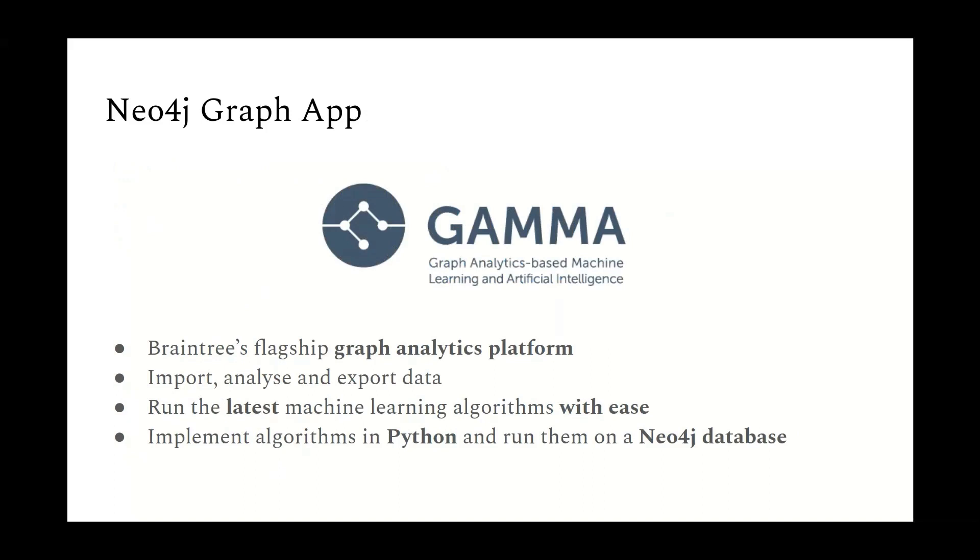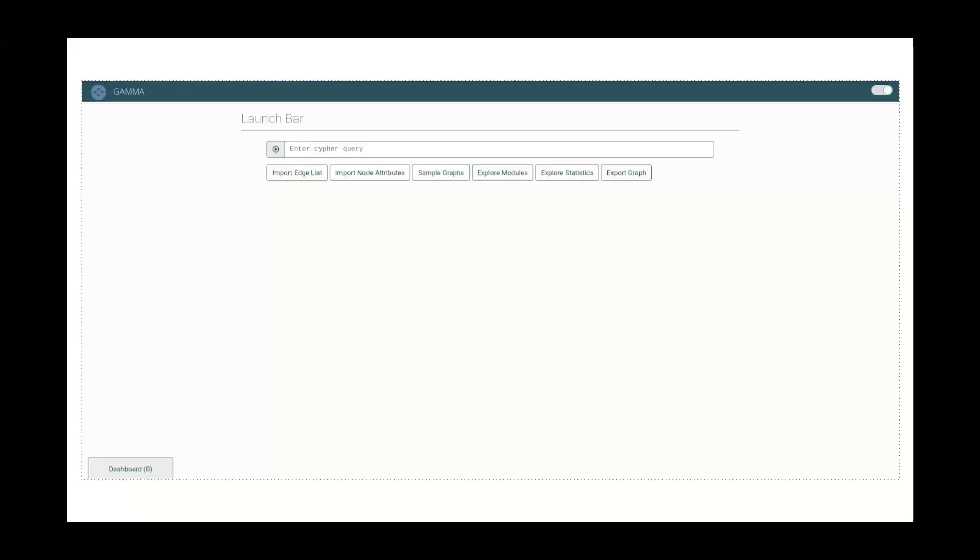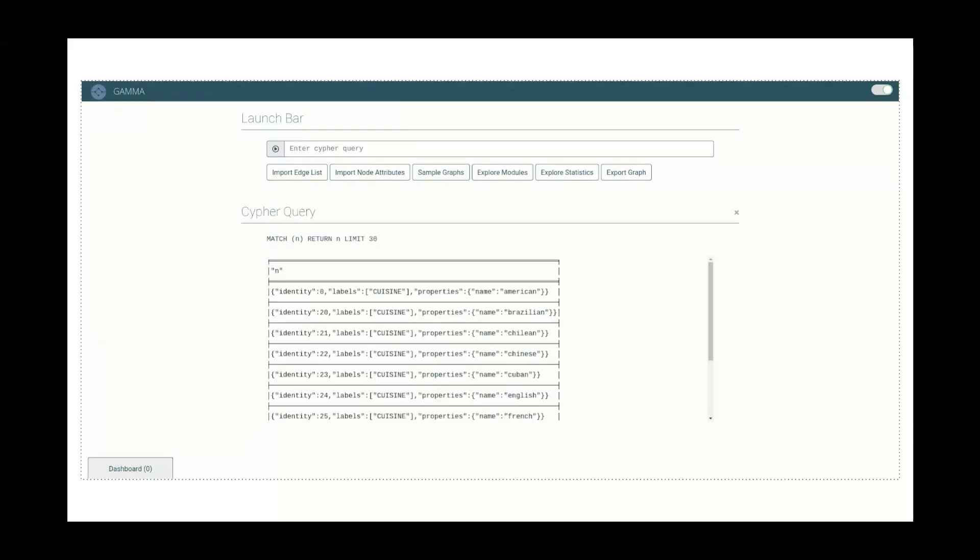Just to recap, we're going to take our cuisines graph, and we're going to apply a graph embedding and embed the nodes in a vector space. And then we're going to measure the Euclidean distance between each pair of nodes. And then that Euclidean distance is going to be used to generate our similarity scores between the countries. So now what we need to do is that we need to run a graph embedding algorithm on our Neo4j database. So we do this using Braintree's Neo4j graph app called Gamma, which is a graph analytics platform which allows you to import, analyze, and export graph structured data within a Neo4j database. And you can run the latest machine learning algorithms really easily. I'm going to give you a quick walkthrough of how you do this. First of all, you go onto the Gamma homepage. And you can see that we have a launch bar at the top, and you can enter cipher queries into this launch bar. So say if we just have a quick look at the top 30 nodes in the graph. You can see here a list of the nodes, and these are all the Cuisine nodes.